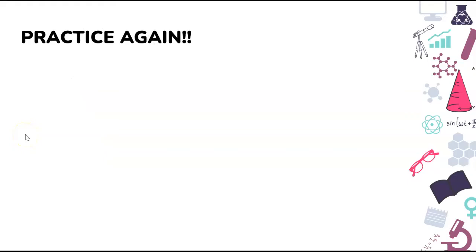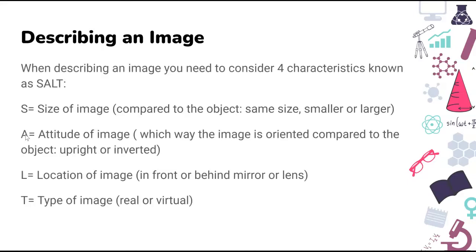Now that we've seen how to do slightly more complicated objects, it's time for you to practice again — pause the video, go to the worksheet, and try the two practice objects. You may have noticed that at the bottom right of each practice image there was the word SALT — S-A-L-T — and a place for you to write beside it. That's an acronym for how you can actually describe an image. There are four characteristics you can use when describing an image.